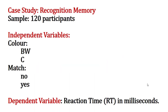Let's start with the between-subjects design. This is a recognition memory study with 120 participants. In a recognition memory study, there is a learning phase in which items are presented — in this case, they are landscapes. Then there is a recognition phase in which some old items and new items are presented. Old items are those presented in the learning phase. The task of participants is to determine whether each item in the recognition phase is old or new. Typically accuracy is measured, but sometimes the task is considered rather easy.